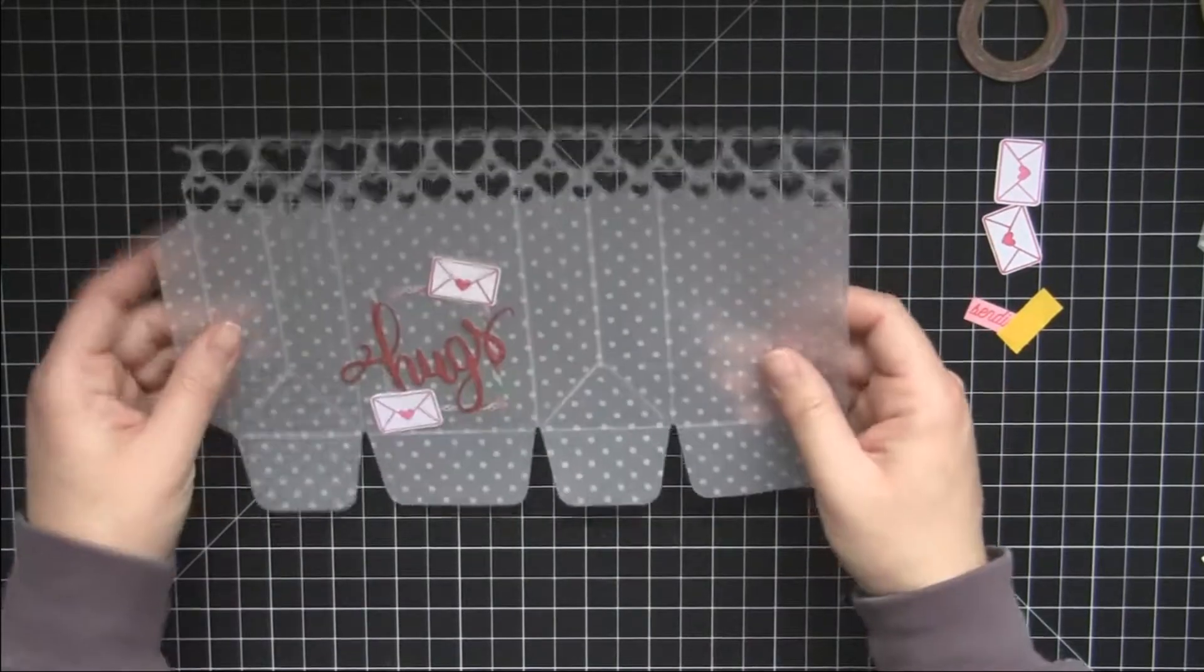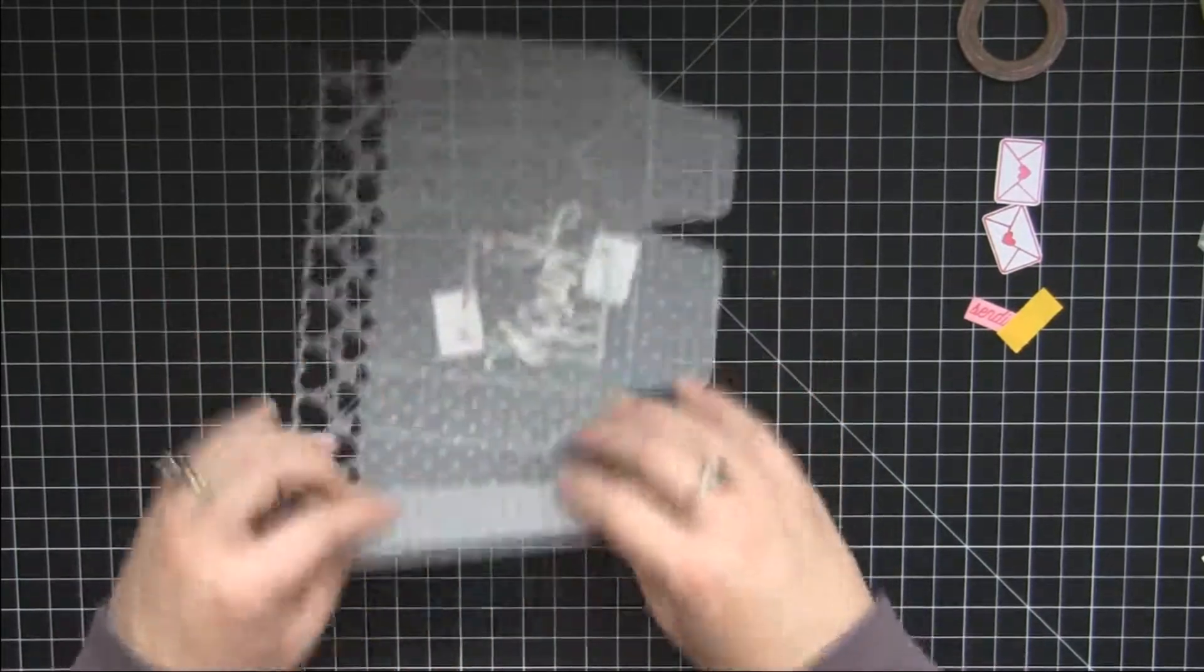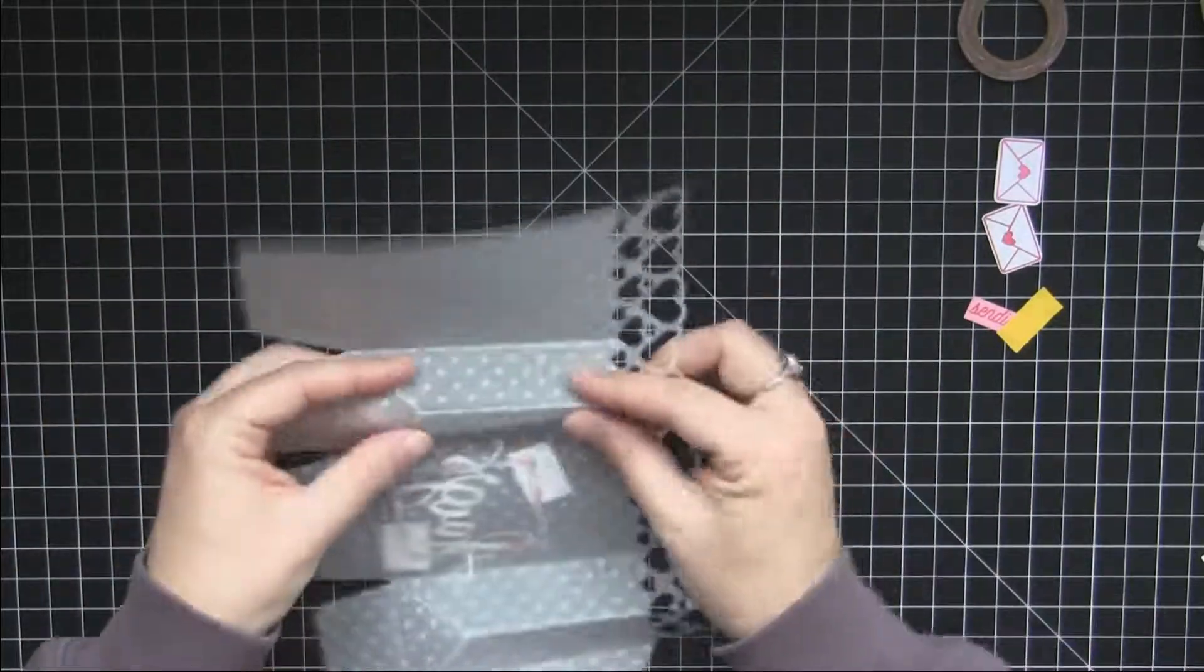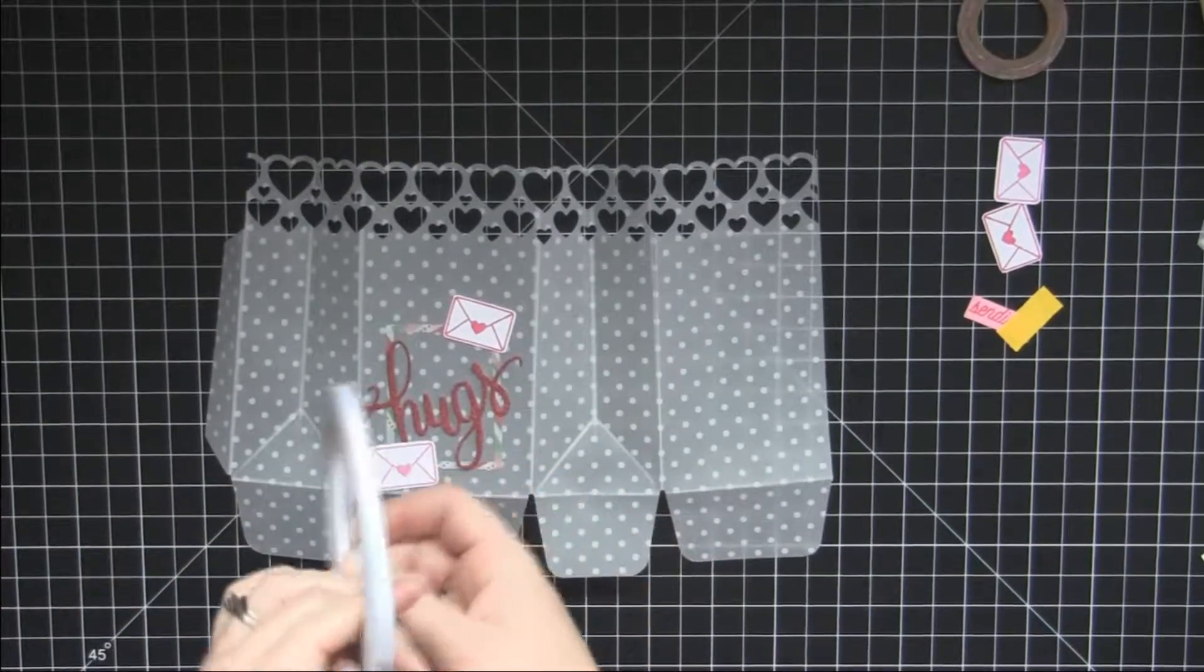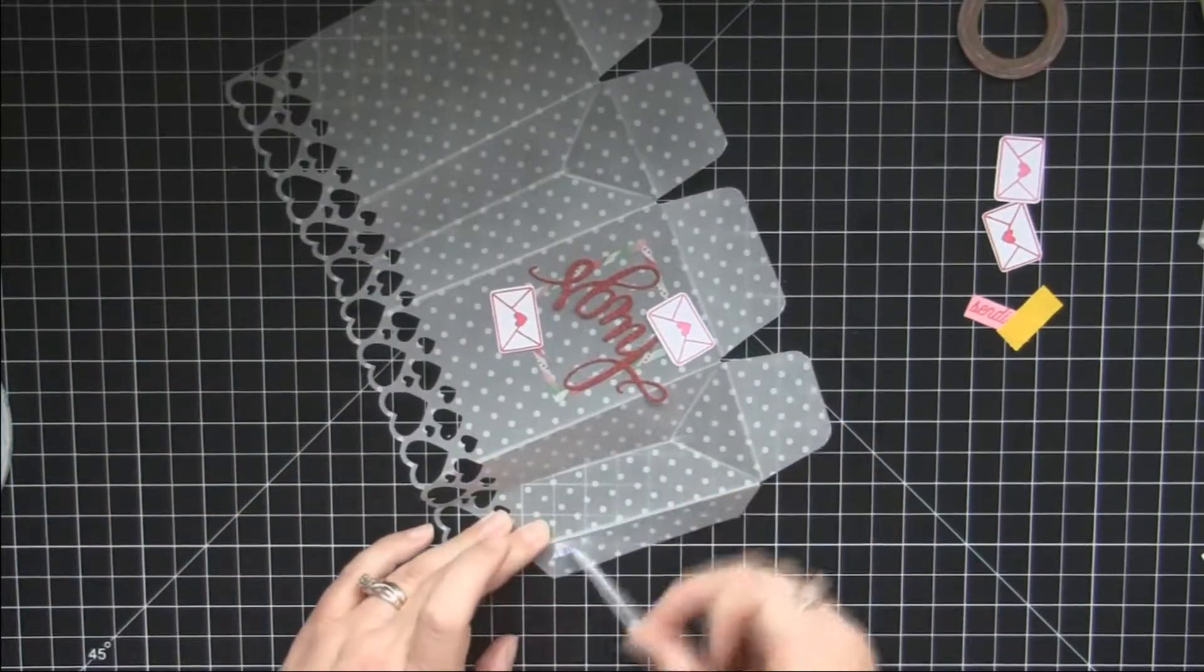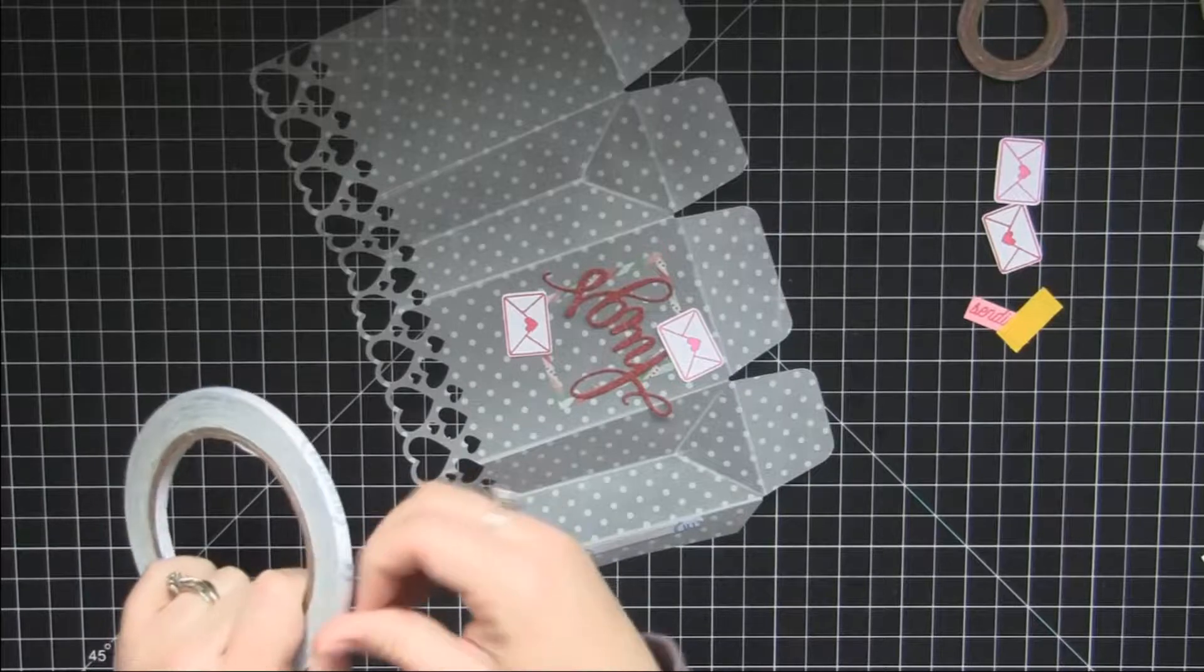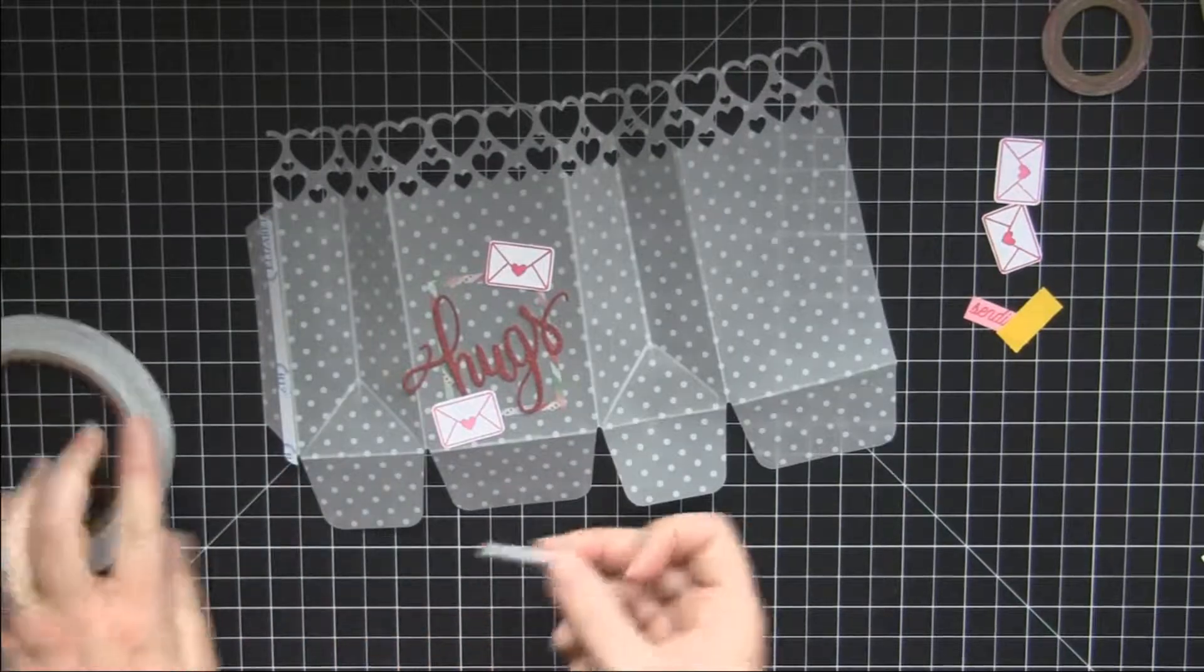Now we can go ahead and put our bag together. Okay, so we're just going to reinforce the fold lines. So I'm just going to use some score tape and put it on this flap right here. This is going to adhere the bag together. And then I'm going to put it on three of the flaps.